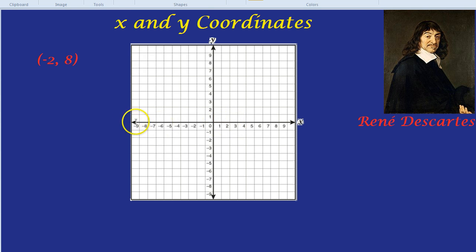First of all we have the x-axis along here going horizontally and we have the y-axis going vertically. Now when I give a coordinate like this in brackets, the first number is the x-coordinate. Let's put that in blue. The first number is the x-coordinate. The second number, you might be able to guess, is the y-coordinate.